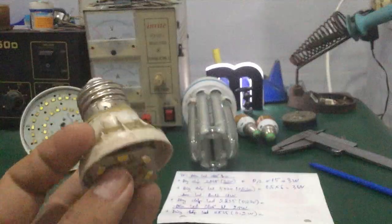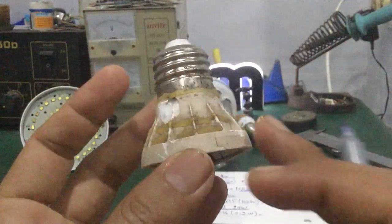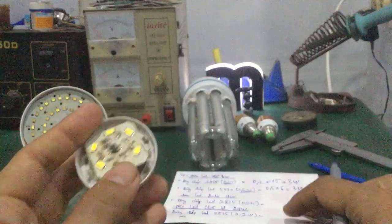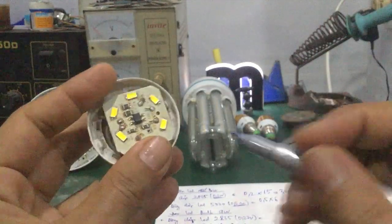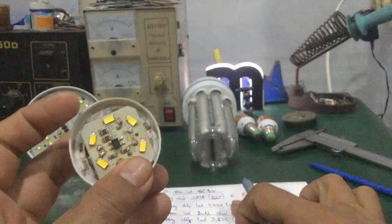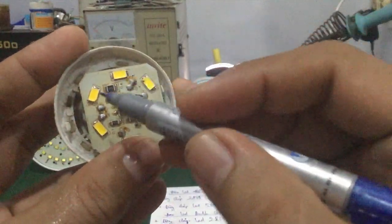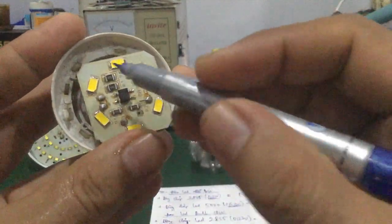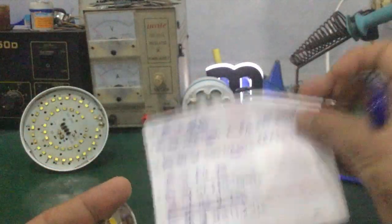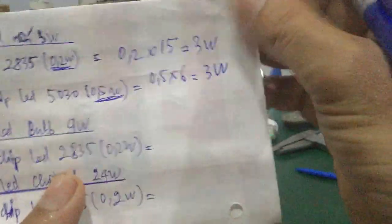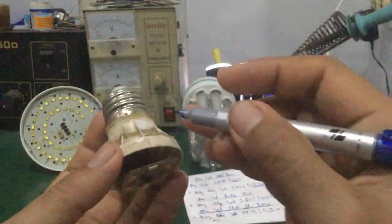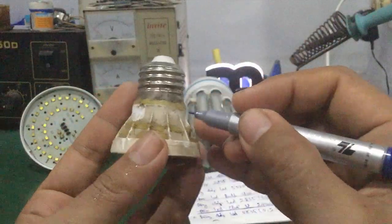Tương tự, đây là cái đèn LED bulb nha các bạn. Nó dùng chip LED 5030, và ở đây có 6 con chip LED — 1, 2, 3, 4, 5, 6. Các bạn lấy 0,5W × 6 = 3W luôn nha. Cái đèn LED này là đèn LED 3W.